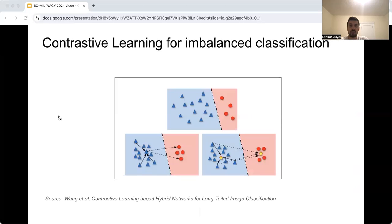Prior work has shown that for imbalanced datasets, cross-entropy loss learns skewed features which can result in biased classifiers. Supervised contrastive learning learns more inter-class separable features for improved classifier learning. So how can we adapt this for MIL methods in pathology?